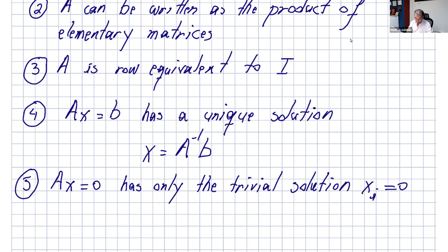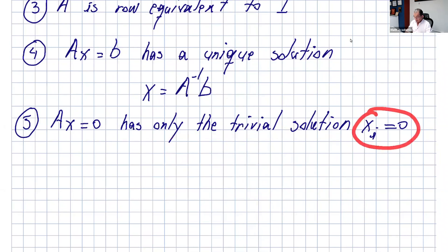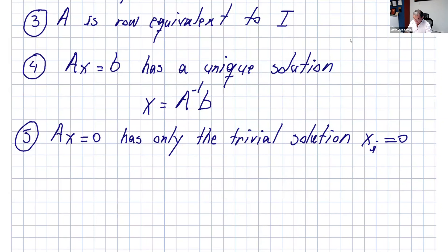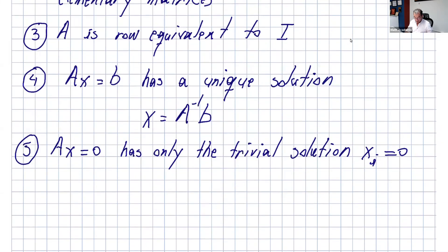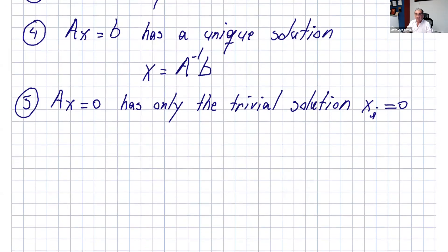Additionally, the homogeneous system Ax = 0 has only the trivial solution where all x values equal zero. And, as we'll see in the next videos, the determinant of A is not equal to zero — that will likely be a sixth equivalent condition. That covers this lecture; thank you for watching and I'll see you in the next one.